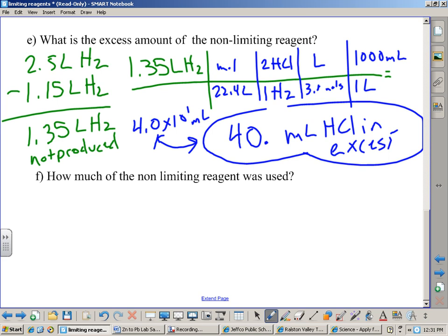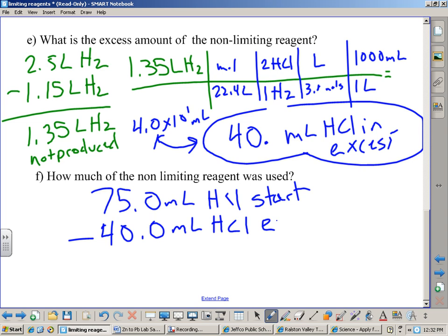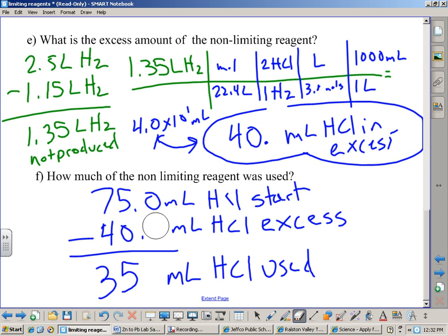Last problem here. How much of the non-limiting reagent was used? This is easy. It's a subtraction problem. We have 75 milliliters of HCl at the start. We subtract the 40 milliliters of HCl that was excess, and we get 35.0, well, 35 milliliters HCl used. Questions? Yes? So, if we're using numbers from, like, previous columns, and we just, like, round them there, just say figs, would be the answer. Yeah, technically we probably should use the unrounded answer here, but in terms of re-rounding this number, it's not going to make a difference.